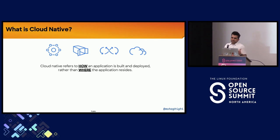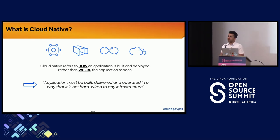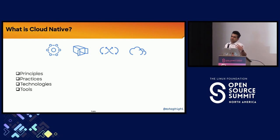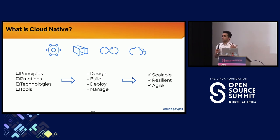What is cloud native? Cloud native refers to how an application is built rather than where the application resides. Your applications must be built, delivered, and operated in a way that they're not hardwired to any infrastructure. Cloud native refers to a set of principles, practices, technologies, and tools that leverage cloud computing resources and services to design, build, manage, and deploy applications in a scalable, resilient, and agile manner.